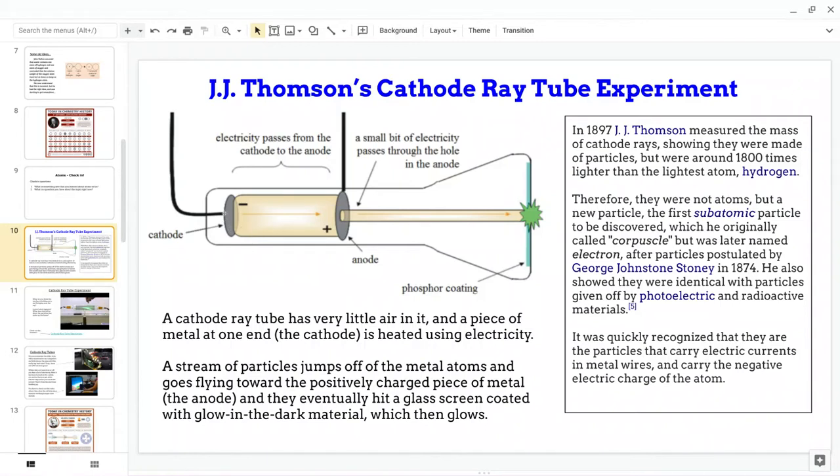Well, what starts to happen is little somethings start flying off this piece of metal towards the positive one, and if there's a little hole there, some of these little particles can get through the hole, and they eventually end up hitting a screen that has a phosphor coating. You know what phosphor coatings are? They're what make fluorescent light bulbs glow. They're glow-in-the-dark stickers.